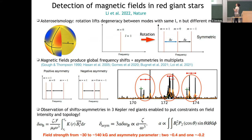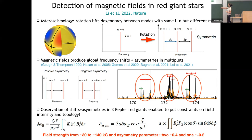The asymmetry parameters tell you something about the morphology: a positive value is compatible with an axial dipole and a negative value with an equatorial dipole. So we have a constraint on both the field strength (30–140 kilogauss) and the rough morphology of the magnetic field deep inside red giant cores.